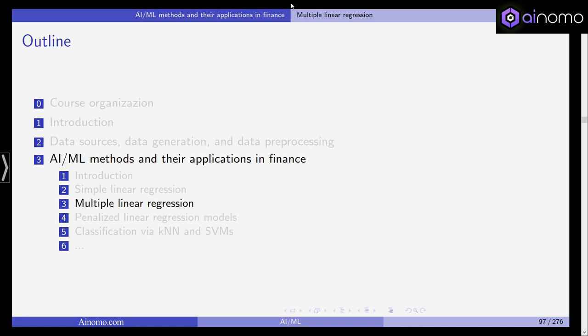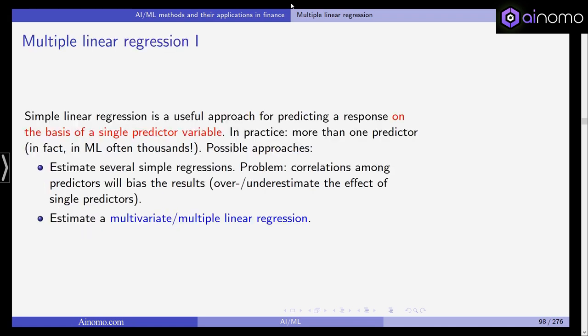Multiple linear regression is simply the extension of simple linear regression by including more than one predictor variable. In practice we all the time have more than one predictor. In machine learning we might end up with thousands of different variables, thousands of predictors. The question now is what can we do?